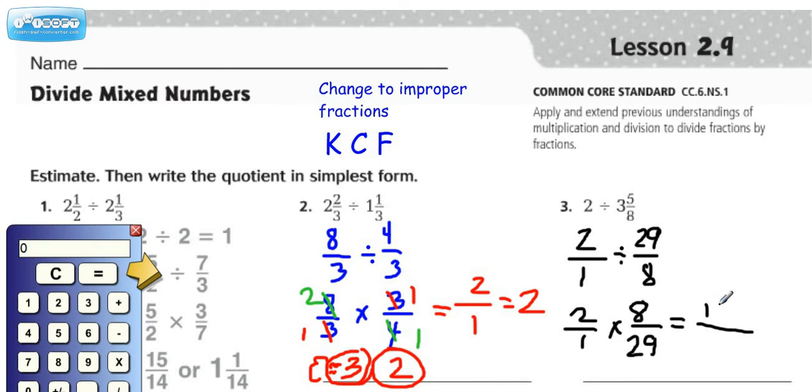2 times 8 is 16. 1 times 29 is 29. The GCF of our numerator and our denominator is 1. So we can be satisfied that we're in simplest form. So that's going to be our final answer.